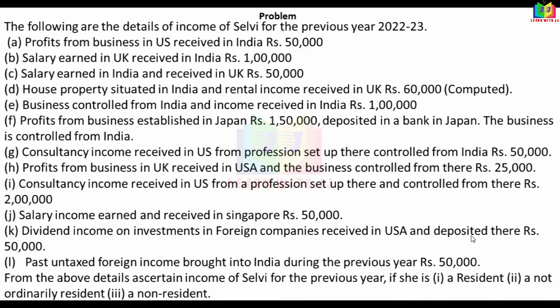Profit from business in UK received in USA and the business controlled from there — this is foreign income. Income on investment in foreign companies received in USA and deposited there — this is foreign income. Past untaxed foreign income brought into India during the previous year, 50,000 — this is not taxable. There are 3 categories: Indian income, deemed to be Indian income, and foreign income.